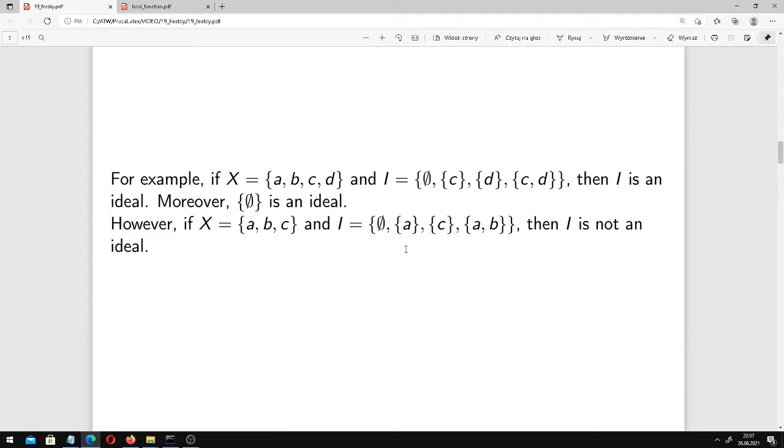There are some examples from the paper in question. If we have this universe which contains four elements A, B, C, D, this is our ideal. This is ideal.